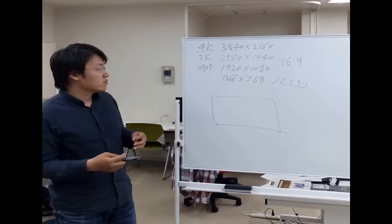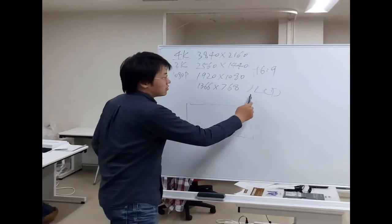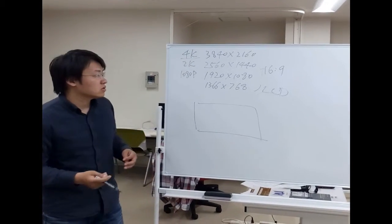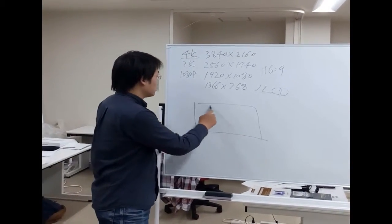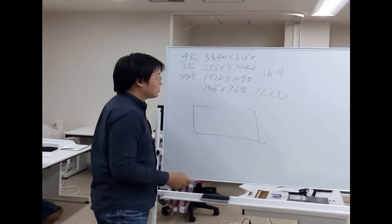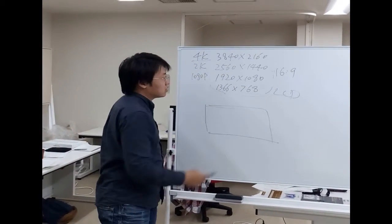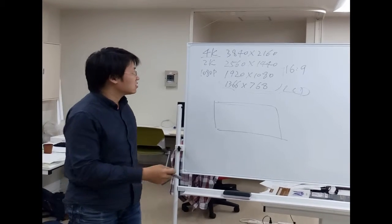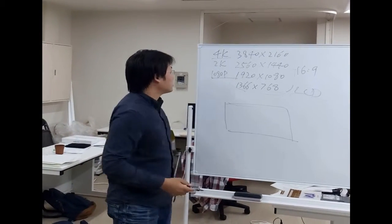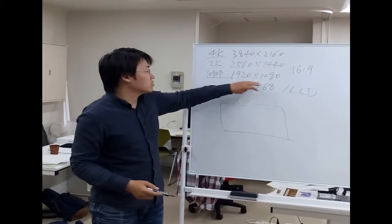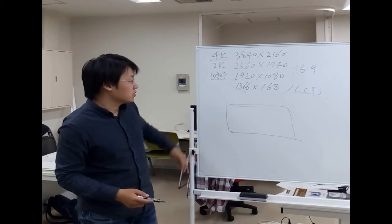4K is a type of resolution of LCD. LCD is a liquid crystal display system. We have different types from very low resolution display systems, then 1080p with this resolution, and 2K, 4K, higher resolution.